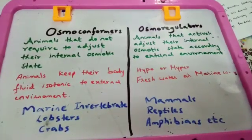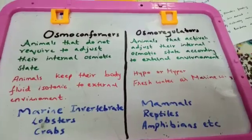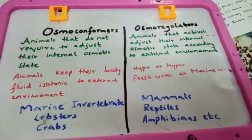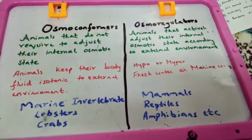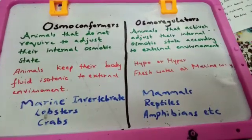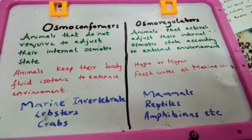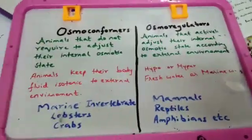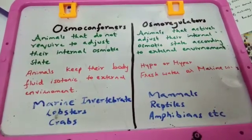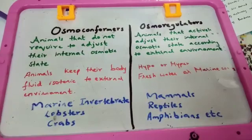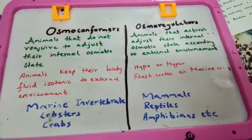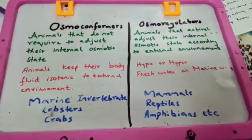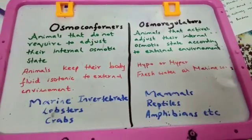We were discussing osmoregulators and osmoconformers. Osmoconformers, as discussed in the previous lecture, don't want to adjust themselves. Their internal osmotic state is stable — their internal and external environments are the same — so there is no need for intake or outgoing of any salt or ions.